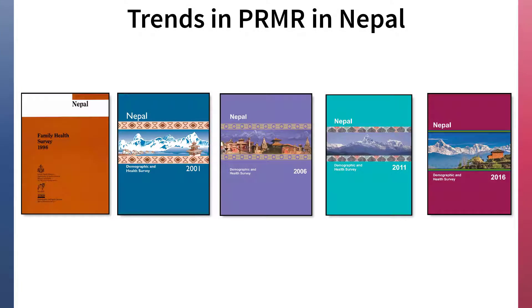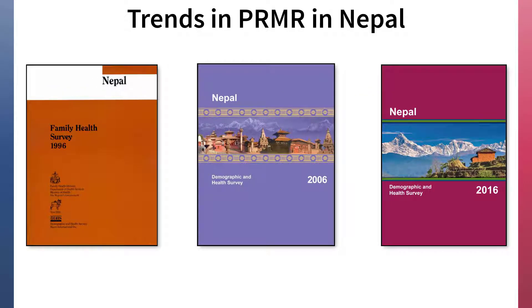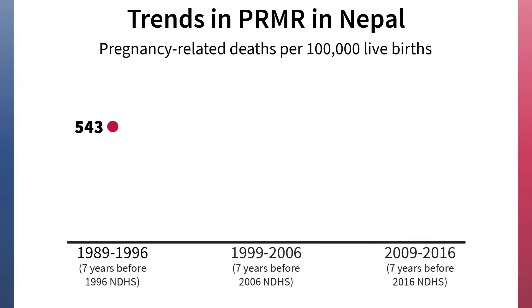Let's examine pregnancy-related mortality in Nepal DHS surveys. Though Nepal has conducted five DHS surveys as part of the DHS program, pregnancy-related mortality data was only collected every 10 years, so overlapping reference periods are not a concern. The first PRMR estimate from the 1996 Nepal DHS was 543 deaths per 100,000 live births. The estimate from the 2006 survey was 281 deaths per 100,000 live births, and the estimate from the 2016 survey was 259 deaths per 100,000 live births.